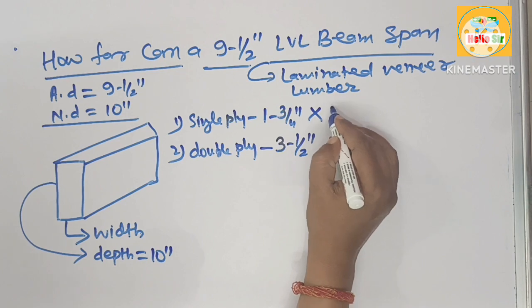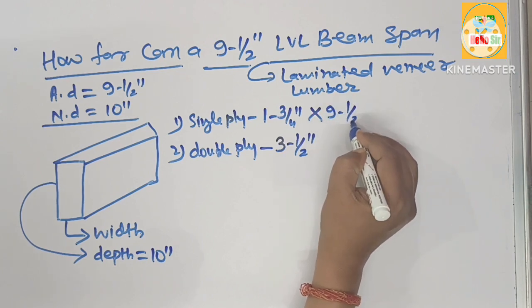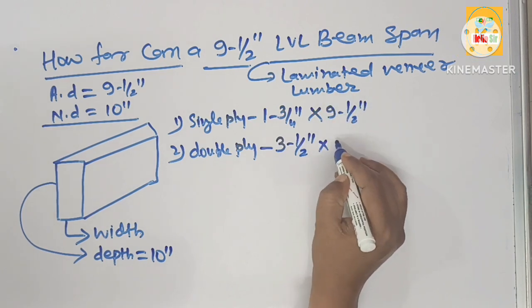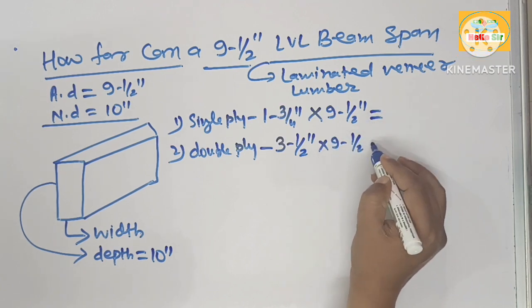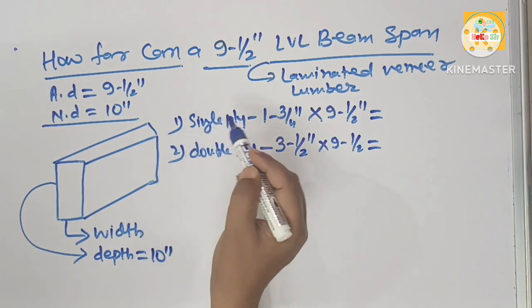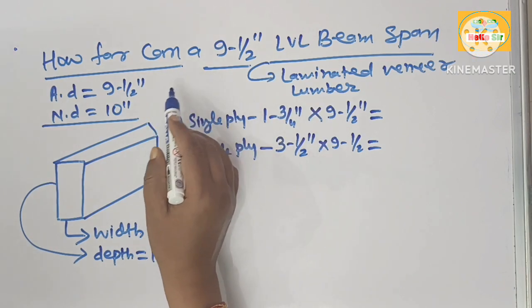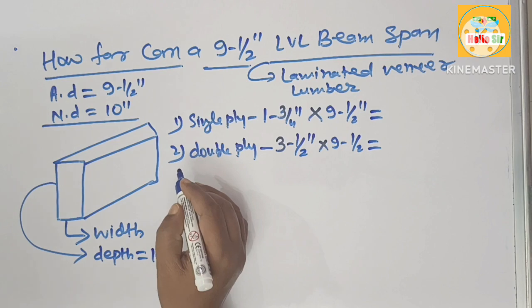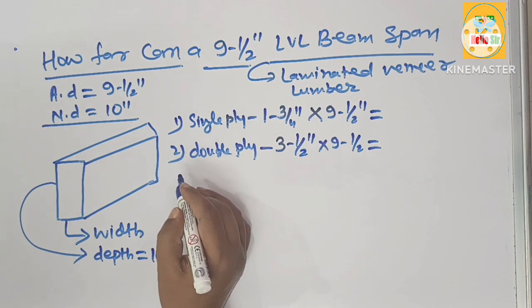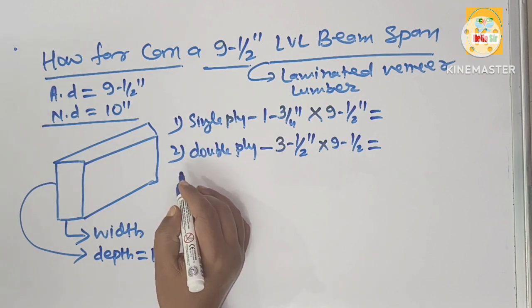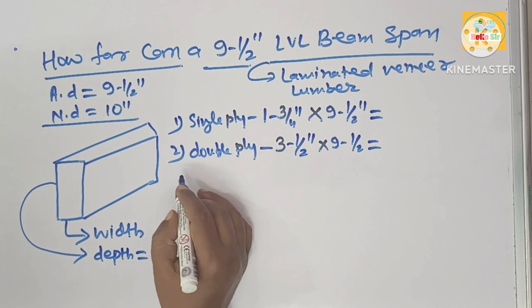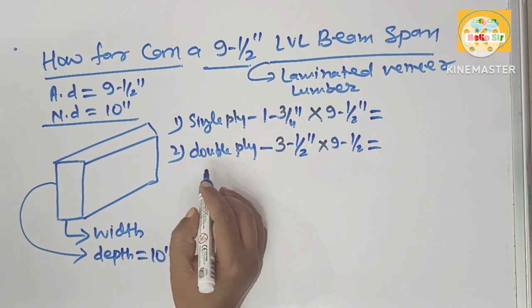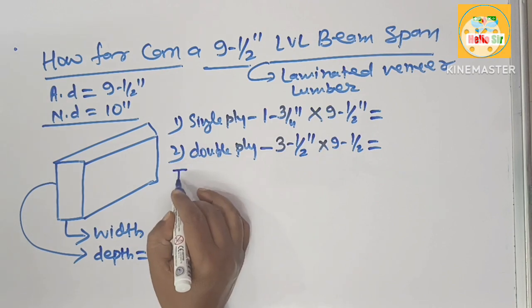Single ply 9½ inches, double ply 9½ inches. What is their span length? You know that the span length of LVL beam can depend on total load acting on it and the construction requirement and building code regulation and some other factors. But here we calculate the span length of this LVL beam according to thumb rule.